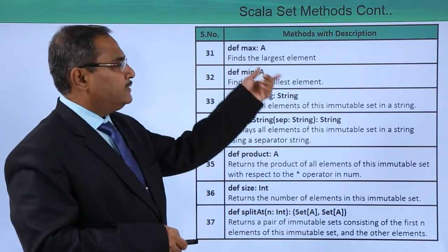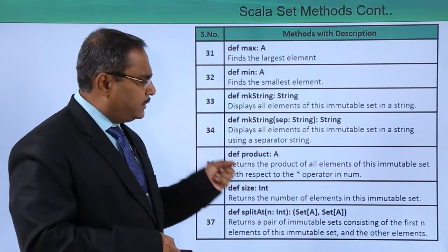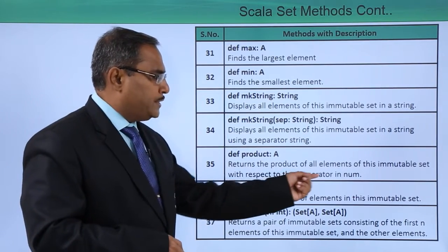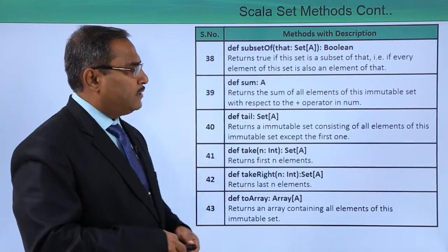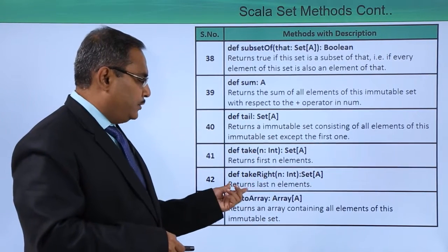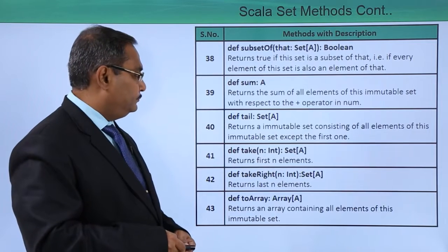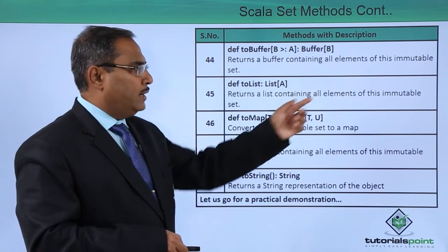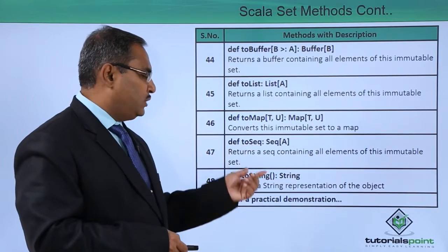We have max, which finds the largest element of the set, and min, which finds the smallest element. Product returns the product of all elements of this immutable set with respect to the star operator in num. We have subsetOf, and sum which returns the sum of all elements of this immutable set with respect to the plus operator in num. We have tail, take, takeRight, and toArray, which returns an array containing all elements. We also have toBuffer, toList which returns a list containing all elements, toMap, toSeq, and toString.